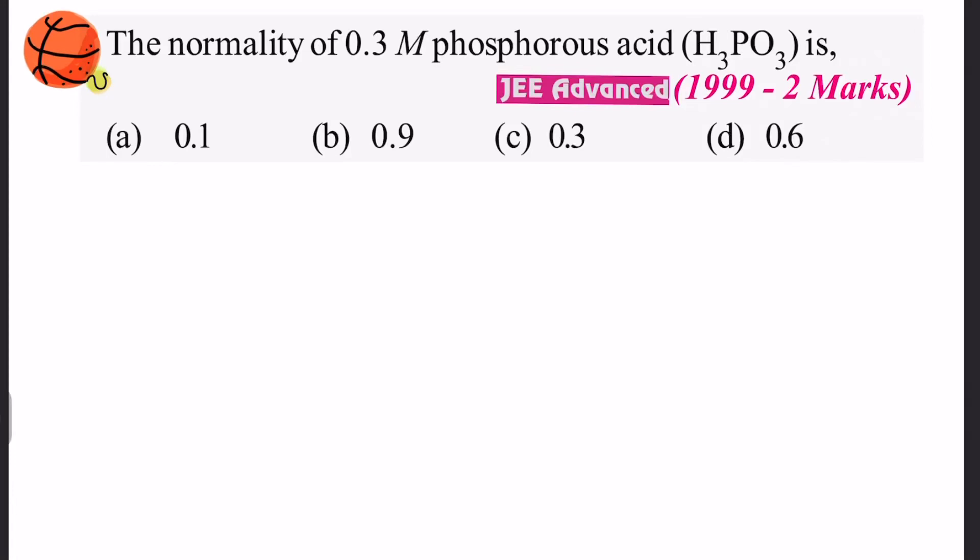Hello everyone, let's discuss this problem: the normality of 0.3 molar phosphorous acid H₃PO₃. Let's first draw the structure of phosphorous acid. Now if you see the structure carefully, it has two replaceable hydrogen, so it is basically a dibasic acid.